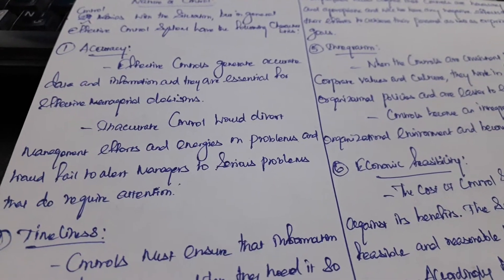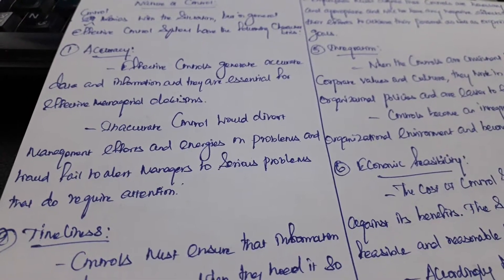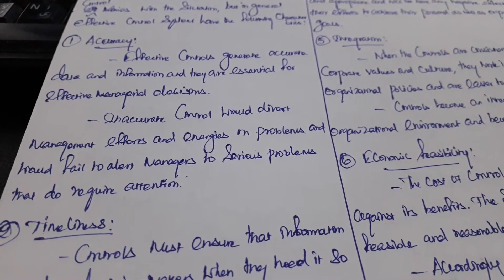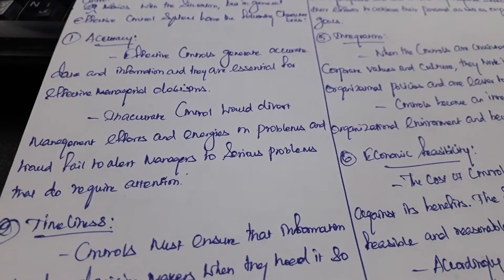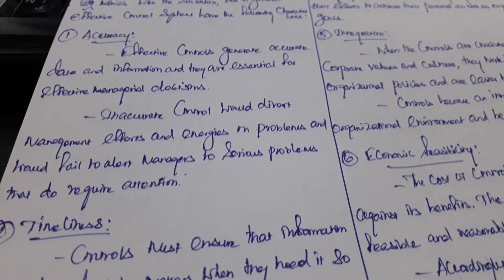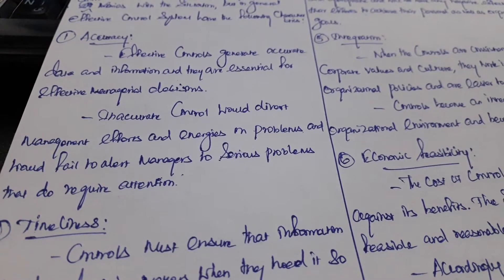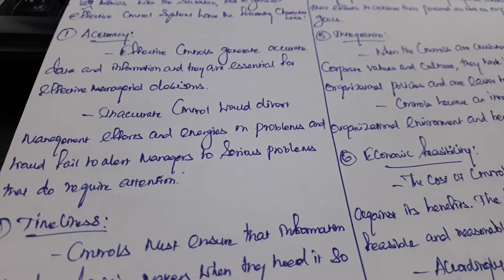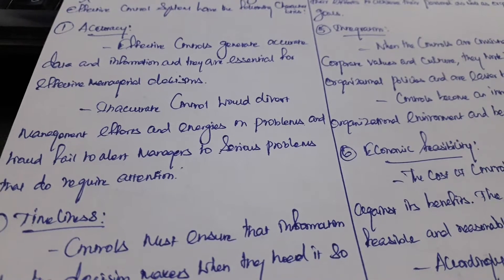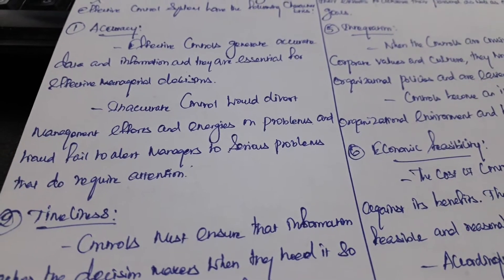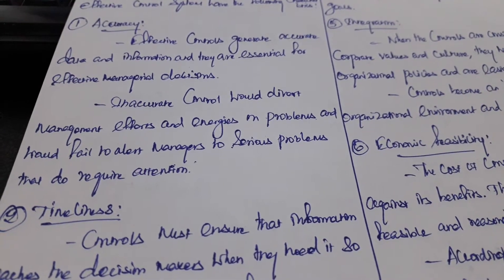Inaccurate control would divert management efforts and energies on problems and would fail to alert managers to serious problems that require attention. In this case, without proper control, management will divert energy and create problems — though the manager can work to solve those problems.